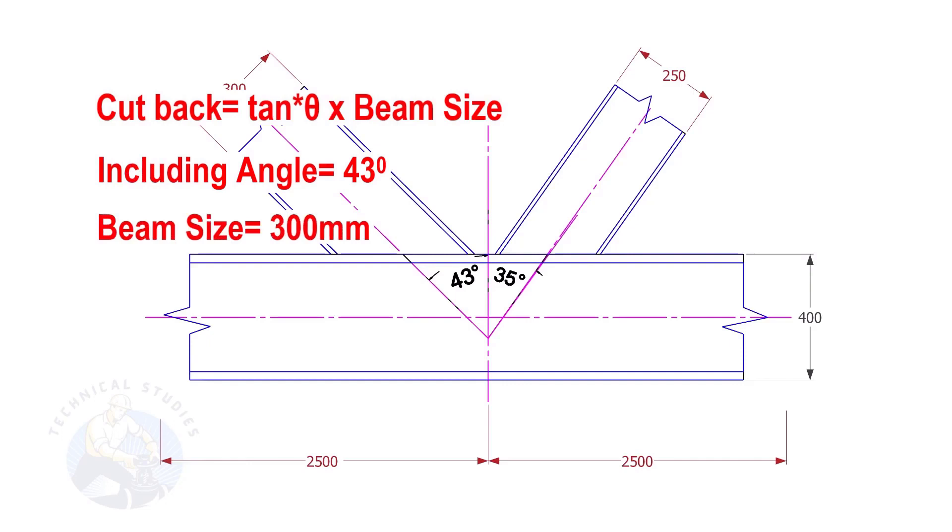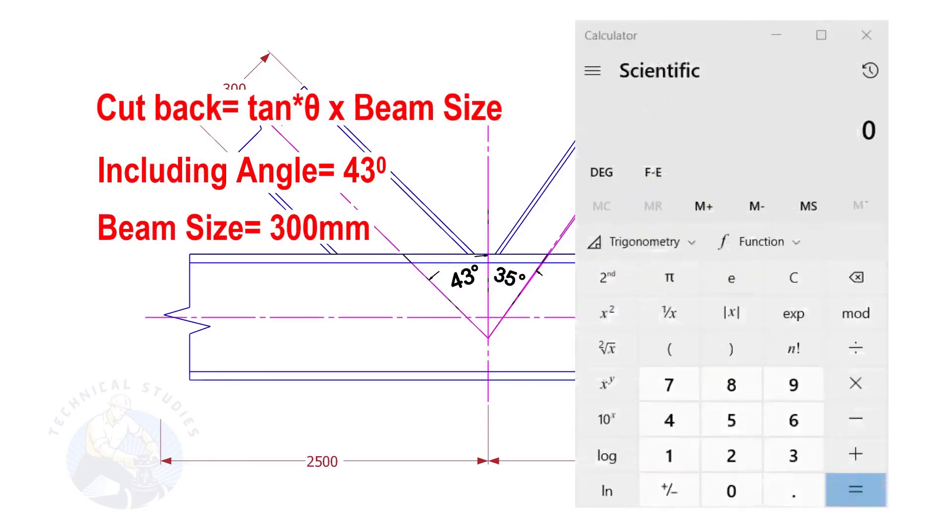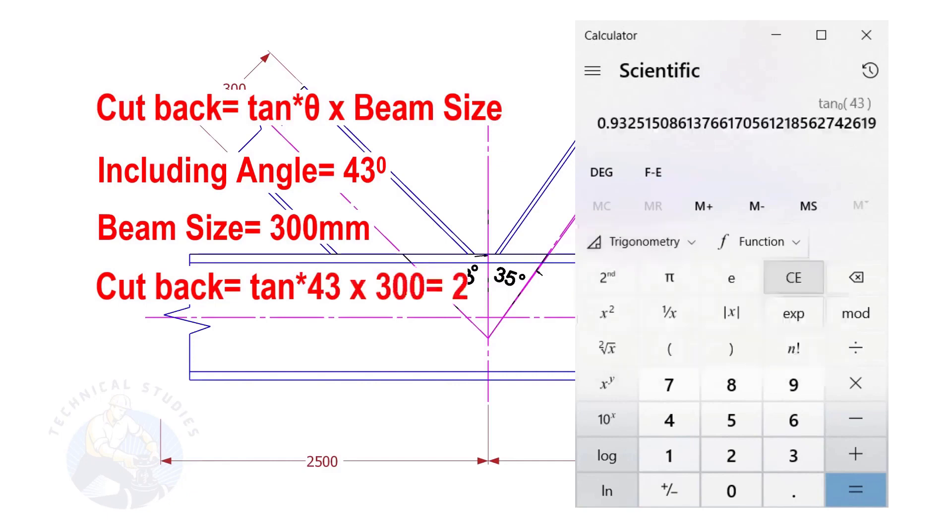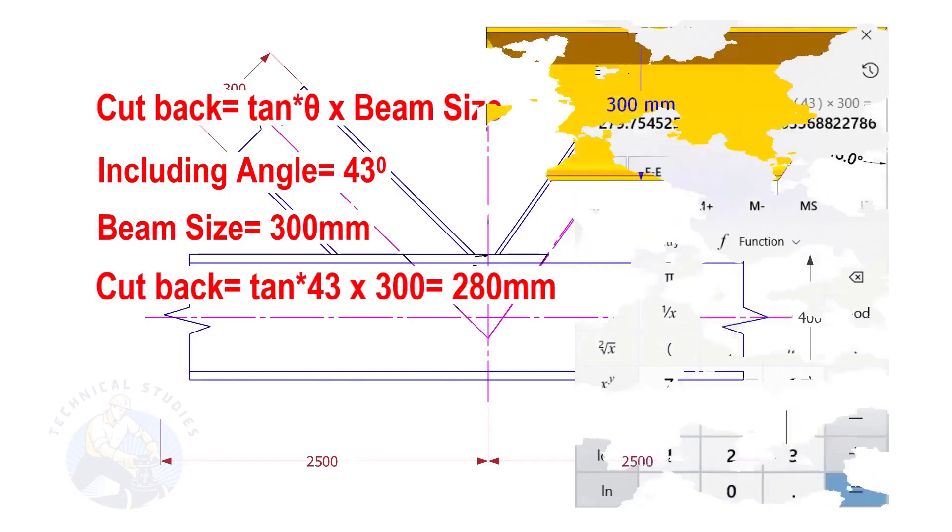The cutback is tan 43 into 300. The answer is 279.7. Let us write it as 280 millimeters.